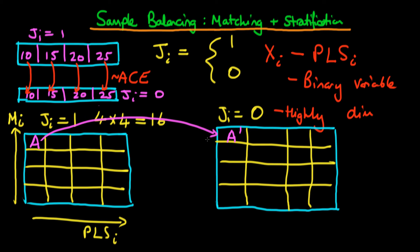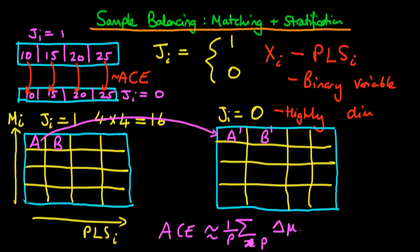If we thought that past year's level of sales and motivation were the only two important variables in determining how well an individual fares in sales, then a simple comparison of means between these two groups might approximate an average causal effect. Similarly, I could do the same thing with cell B compared with cell B primed in the untreated. We could do that for all different subsamples, and then come up with an estimate of the average causal effect as a weighted average across the P subgroups — a sum over all P of the difference in means in each subgroup, comparing A with A prime, B with B prime, C with C prime, and so on.